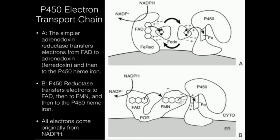In any case, as you can see in both these situations, the electrons are going to come from NADPH. The NADPH is going to come into one of the enzymes and transfer its electrons to it, and it's initially going to transfer them to an FAD.